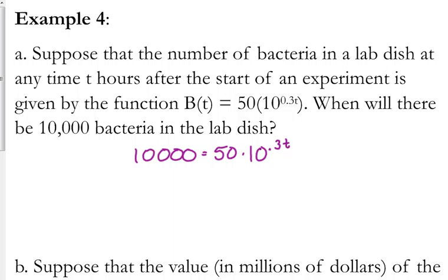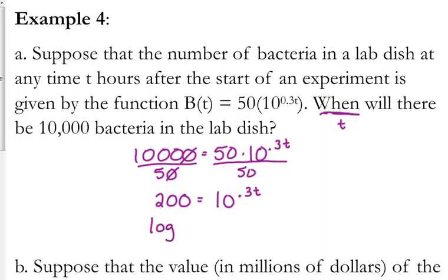The question is when, so that means we're looking for t. Let's divide both sides by 50. So one of those zeros cancels, and 1,000 divided by 5 is 200. We need to write this in logarithmic form. So it's the log of 200 is equal to 0.3t, and then divide both sides by 0.3.